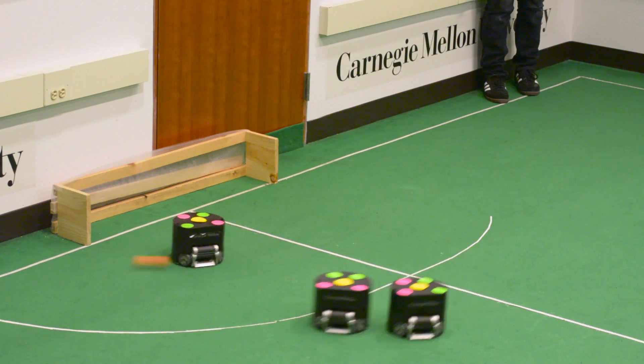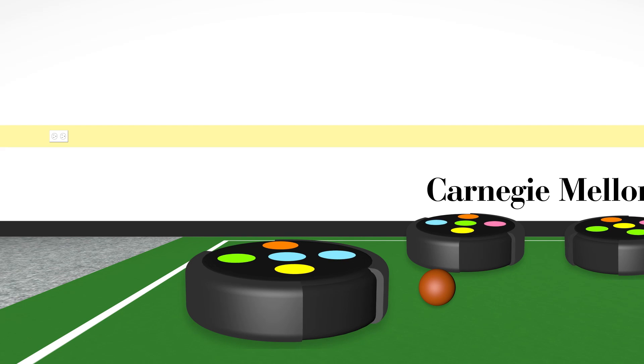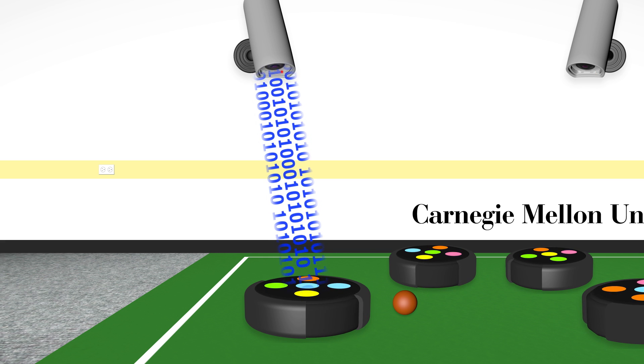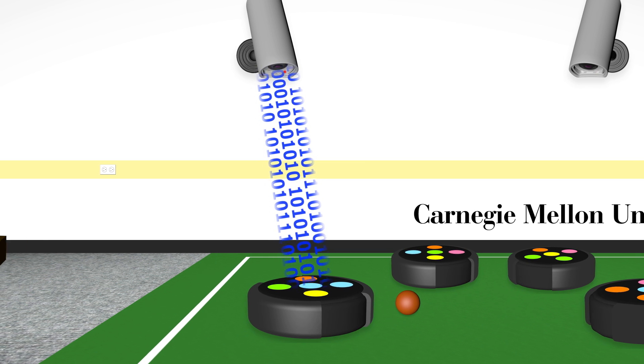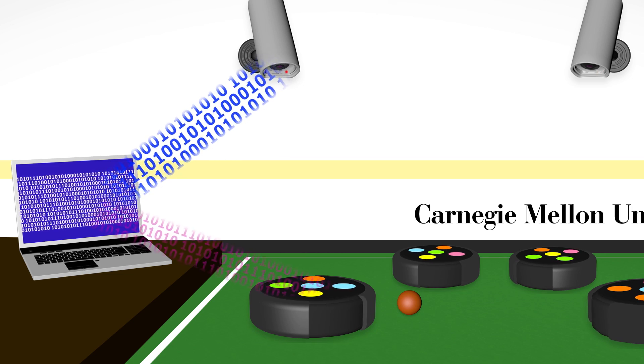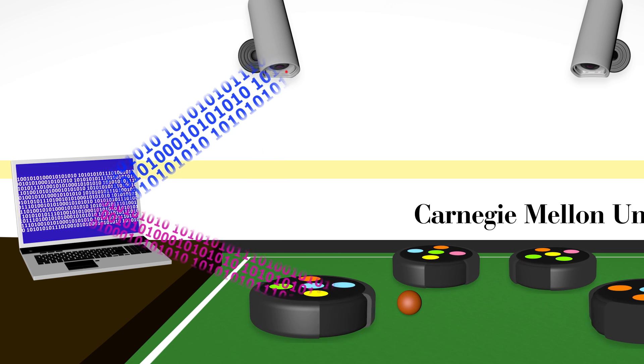But how do these robots work as a team? On top of each robot is a color-coded dot. Cameras mounted above the field use the dots to determine the position of each robot. Computers on the sidelines develop player strategies and send commands to the robots wirelessly.